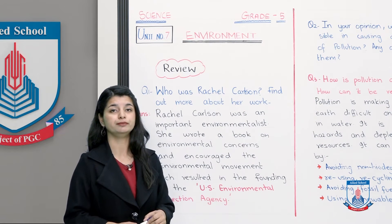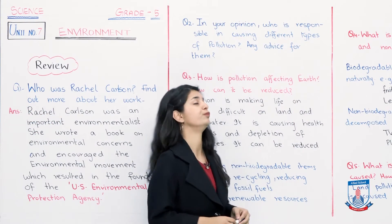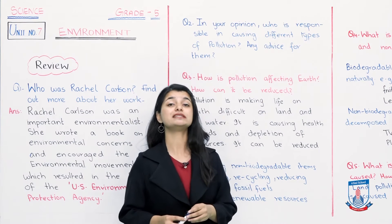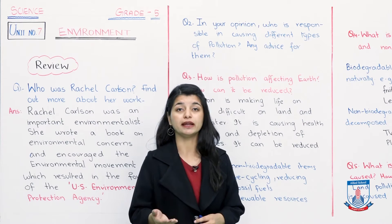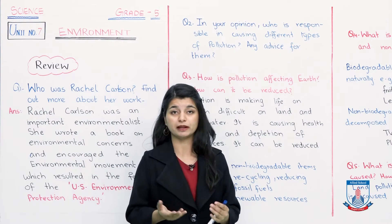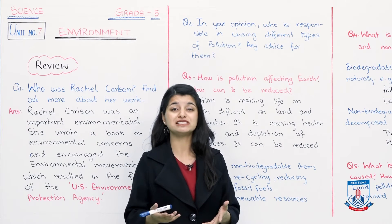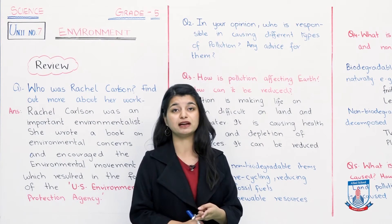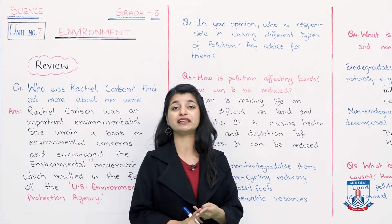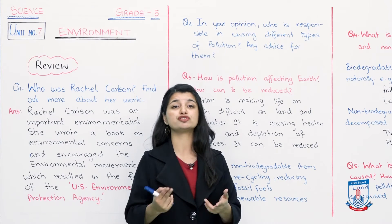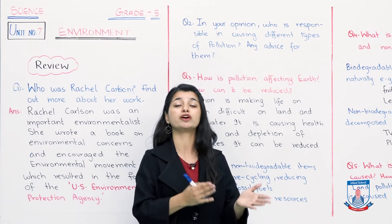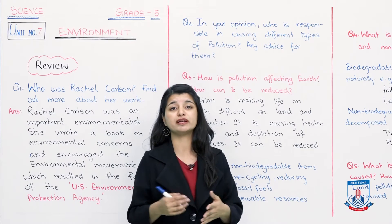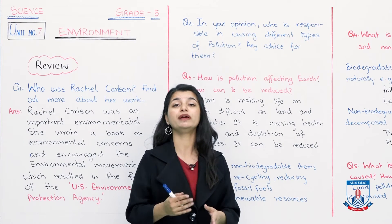Now we can proceed to question number 2: in your opinion, who is responsible for causing different types of pollution? Any advice for them? I have not written the answer here because the question says 'in your opinion,' so my opinion cannot be the same as your opinion. In my opinion, humans are responsible — people who dump their waste, dump sewage waste, or use cheap pesticides in the wrong ways. But in your opinion, who is responsible? You can say it's children, particular people, or only factory workers — whatever you think, write it here.